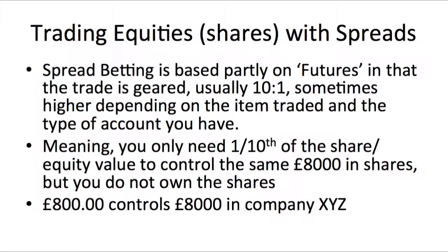We can't profit with shares if the market's going down. That's a key difference between actually buying shares and trading equities via spread betting, where there are huge advantages. Spread betting is based partly on the futures market and the trade is typically geared 10 to 1 — though this depends on what you're trading, the type of account you have, and the broker. At 10 to 1 gearing, you only need one tenth of the cost of the shares to control the same value. So 800 pounds controls the same 8,000 pounds worth of shares — 1,000 shares — that you would otherwise have had to spend outright.